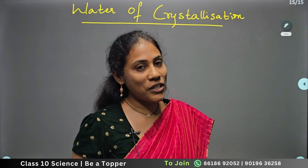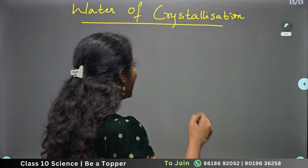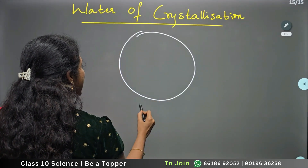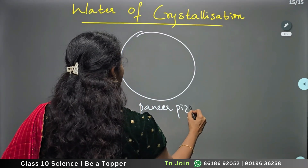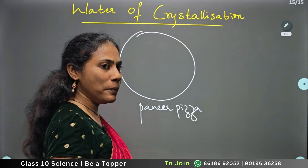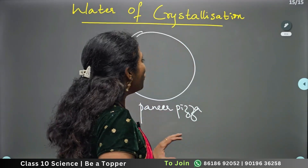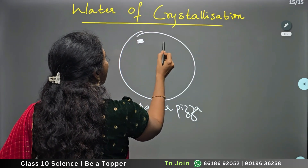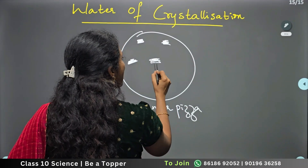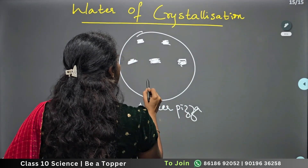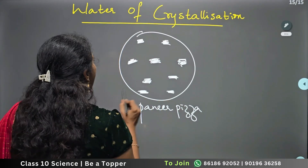Before I go to the definition, look at this very interesting example. Imagine you have a pizza — say it is a paneer pizza, or whatever your favorite: blueberry pizza, chicken pizza. I am taking a paneer pizza. You can see there are certain paneer pieces here and there on the pizza.